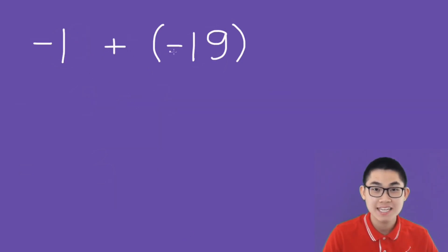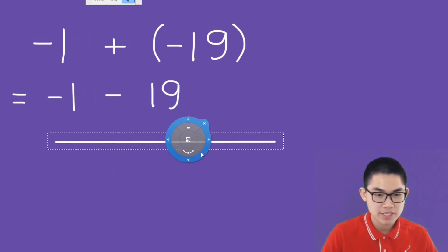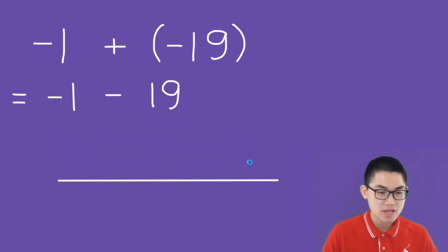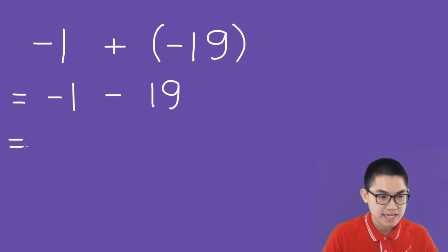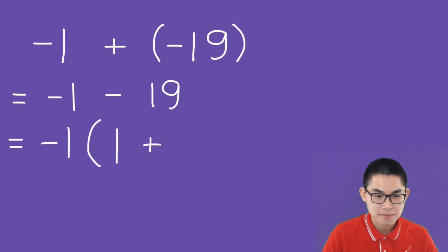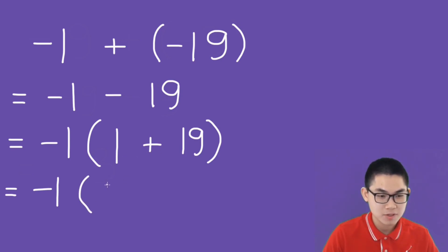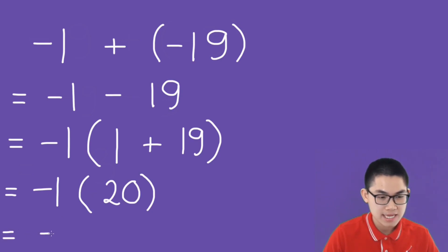Negative 1 plus negative 19 is the same as negative 1 minus 19. Let's try using the faster method. We factor out negative 1 and flip the sign, so negative 1 becomes positive 1 and negative 19 becomes positive 19. We have negative 1 times 1 plus 19, which gives you 20, and negative 1 times 20 is simply negative 20.